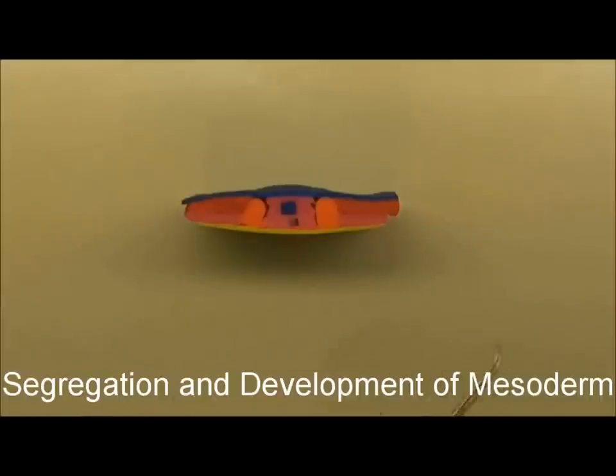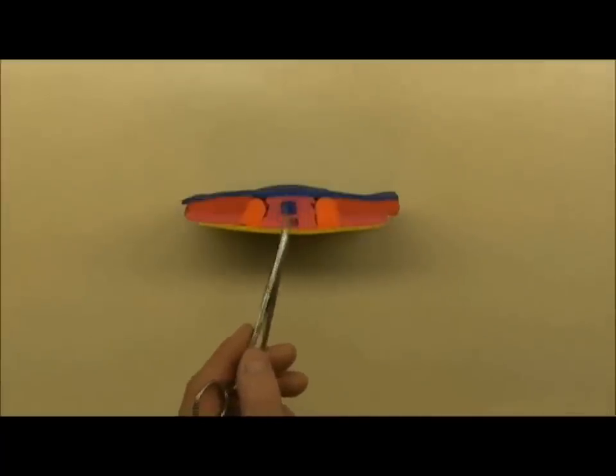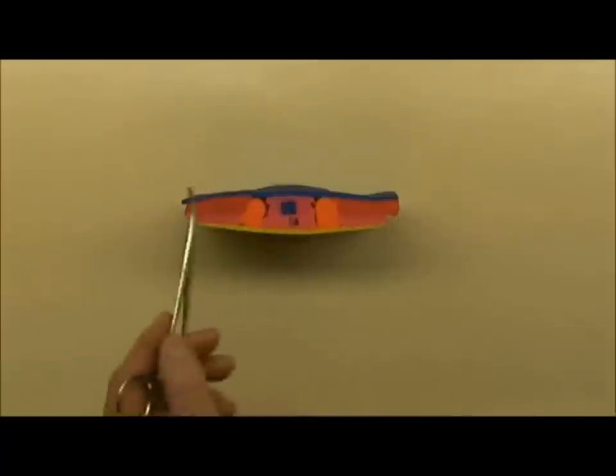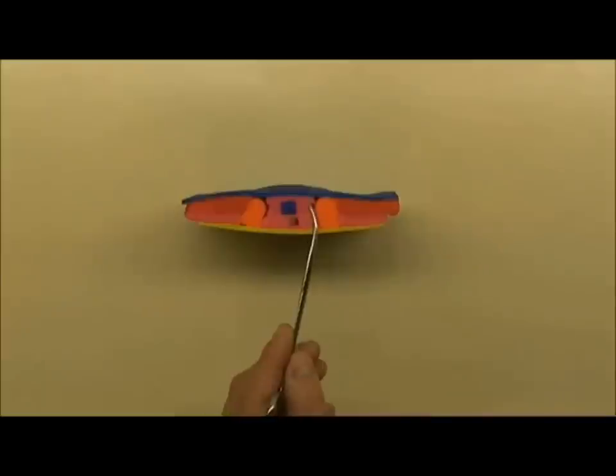So last time we talked about how under the influence of the notochord we formed the neural tube, the true ectoderm, which is going to form the dermis, and then endoderm below, and the segregation of the different parts of the mesoderm into the somatic, intermediate, and lateral plate mesoderm. Now this is the point where we actually take these layers, these flat layers, and form a series of tubes.